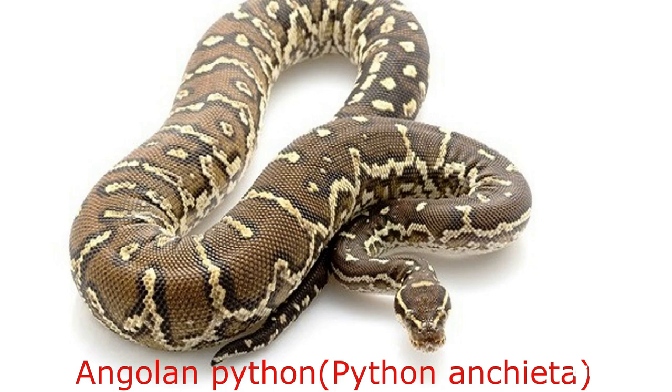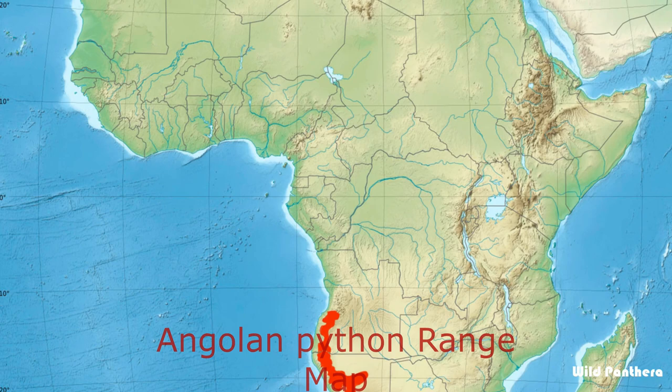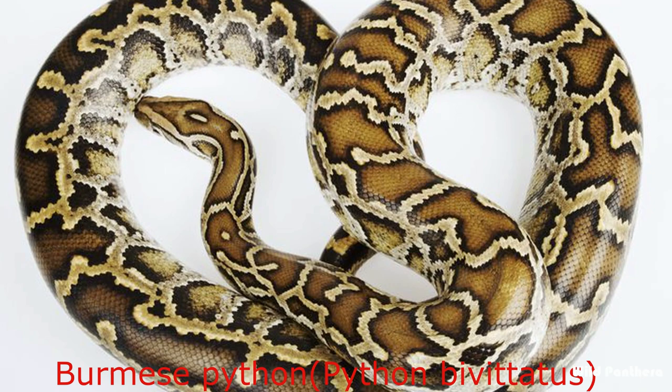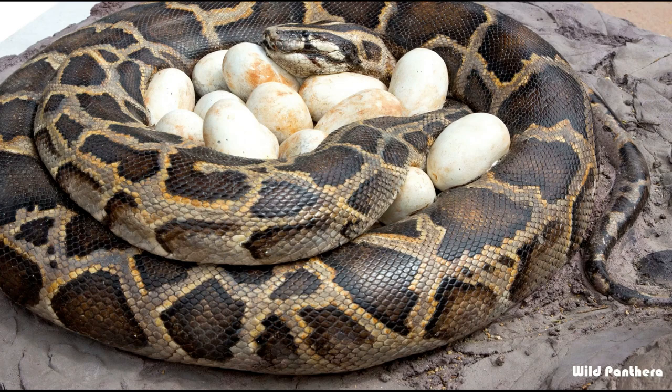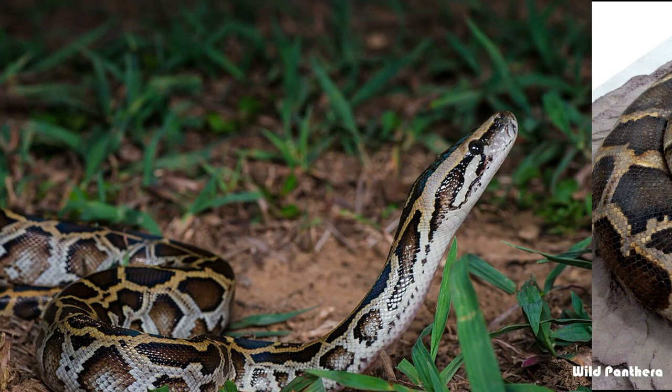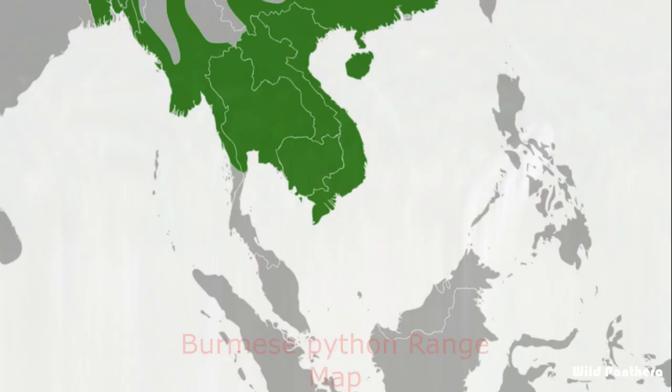Angolan Python: This non-venomous python species is endemic to Southern Africa. According to Broadley, this species is most closely related to the Ball Python of Western Africa. Burmese Python: The Burmese Python is one of the five largest species of snakes in the world. It is native to a large area of Southeast Asia but is found as an invasive species elsewhere. Until 2009 it was considered a subspecies of Python molurus, but now is recognized as a distinct species.